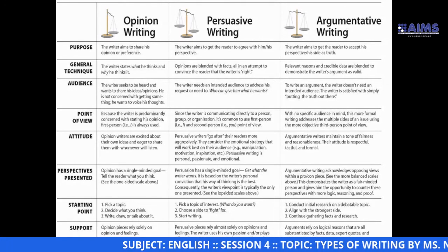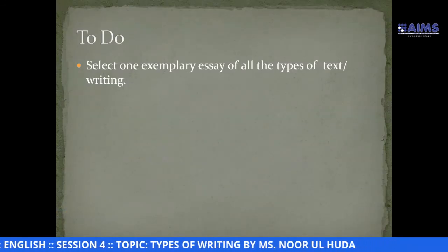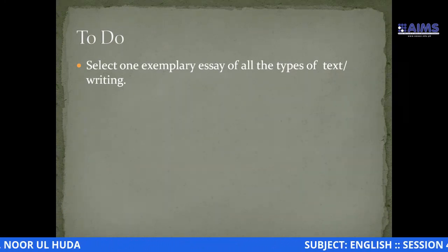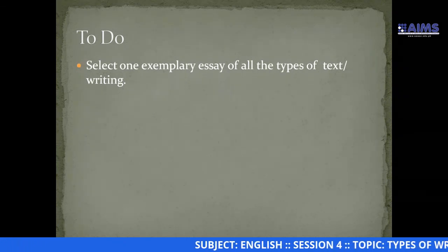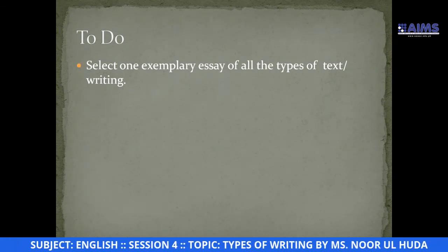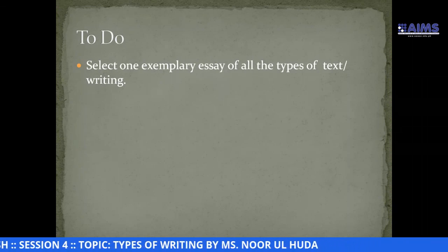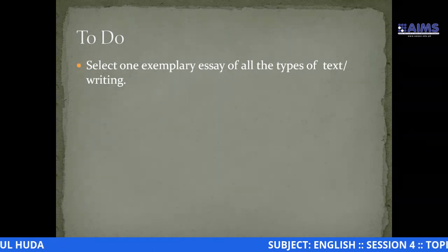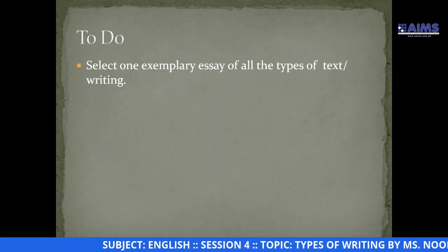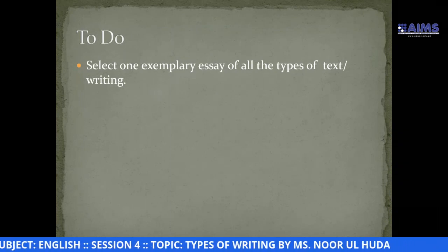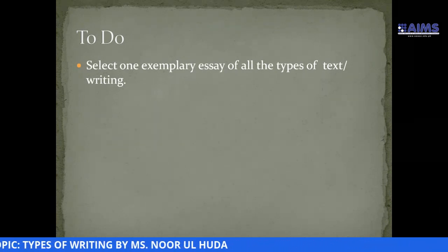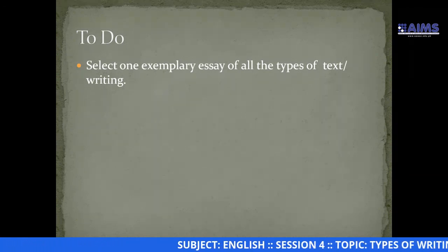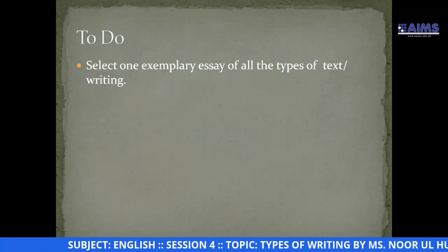Argumentative writing relies on logical reasons that are substantiated by facts, data, expert codes, and evidence. This concludes the topic. What you need to do is select an exemplary essay for each of the main types of writing discussed — narrative, descriptive, expository, persuasive, and argumentative — and explain why each essay belongs to that type. You only need to focus on the main types, not subtypes. Select one example essay for each type. Thank you.